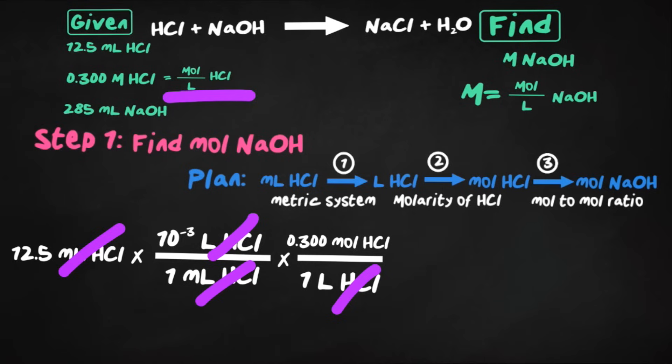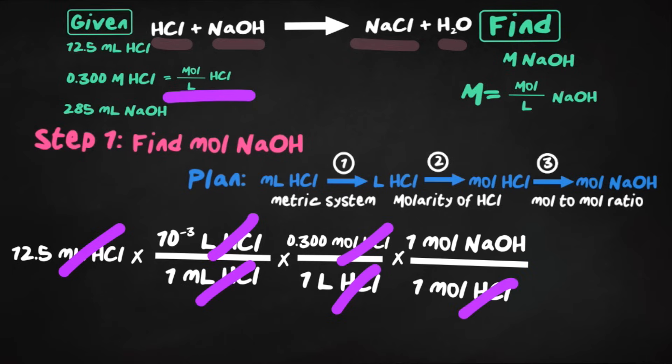So note that going back to our balanced equation, everything is a one-to-one relationship, meaning there is no coefficient in front, there's no number in front of that compound, so it's just a one-mole relationship to everything. So I'm going to put one mole of NaOH on top, and one mole of HCl on the bottom. Then once we do that, our moles of HCl would then cancel, and we're finally left with moles of NaOH.